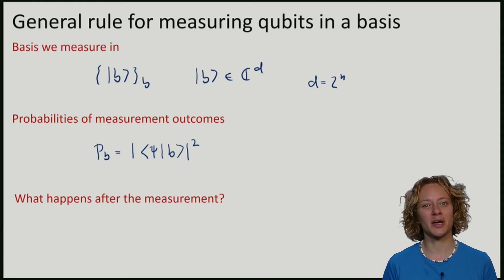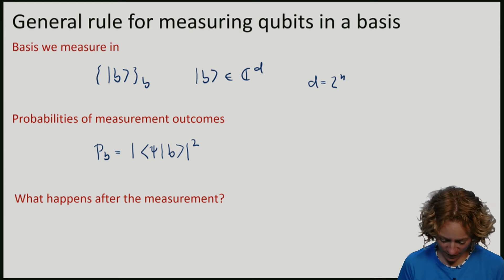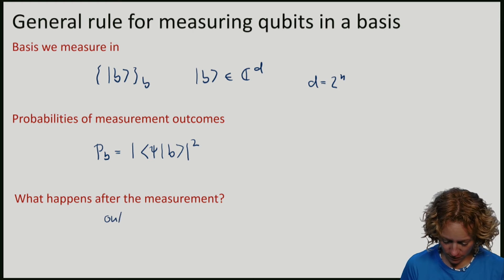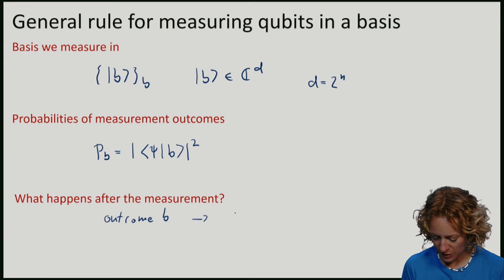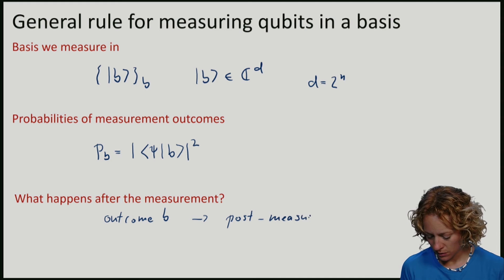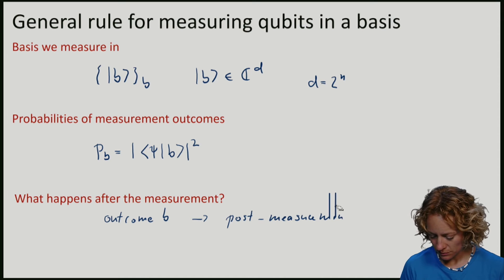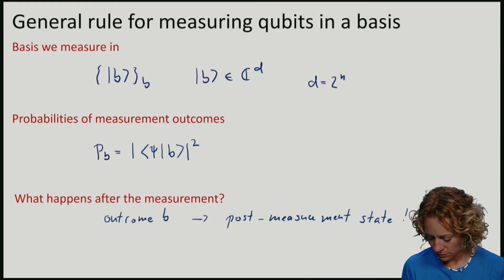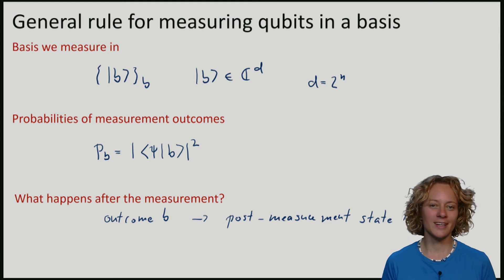And again you might ask, what happens after the measurement? If outcome b occurs, then the state collapses to b. We will also call the state after the measurement the post-measurement state. This is the rule for measuring qubits in the basis.